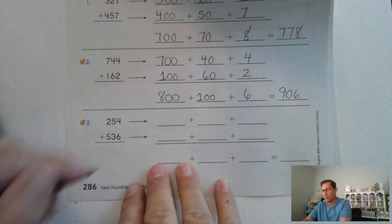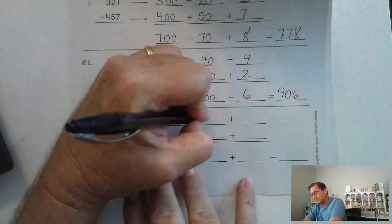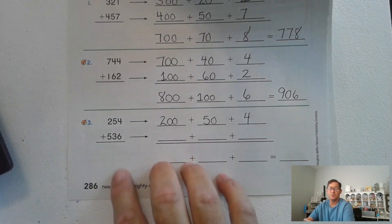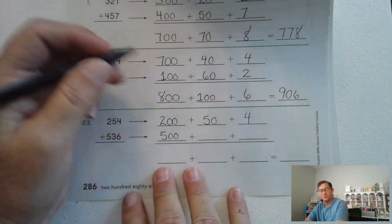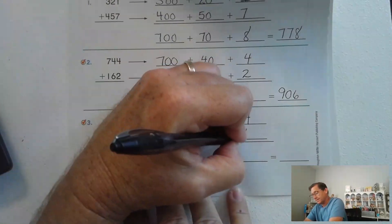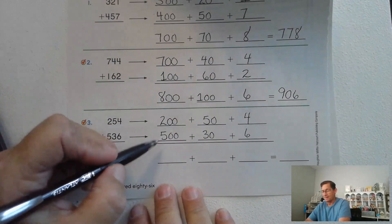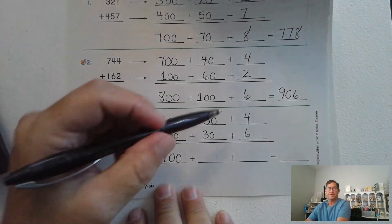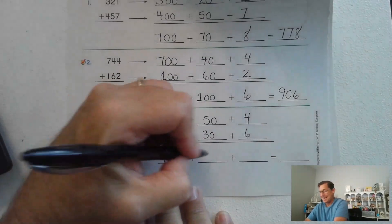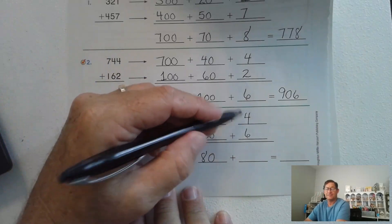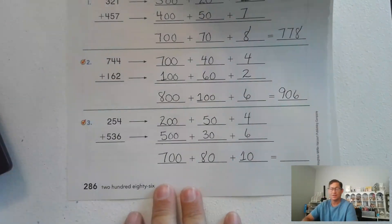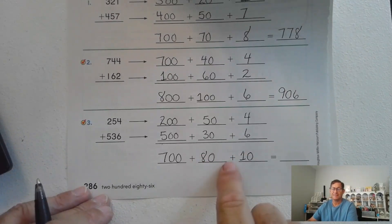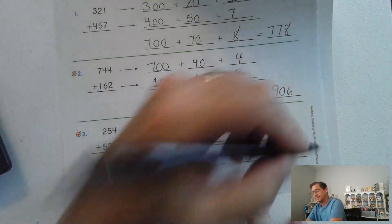Two hundred fifty-four: two hundred plus fifty plus four. Five hundred thirty-six: five hundred plus thirty plus six. Add the hundreds: five hundred plus two hundred is seven hundred. Fifty plus thirty is eighty. Six plus four is ten. So we have seven hundred eighty plus ten. Eighty plus ten is ninety, so seven hundred ninety.